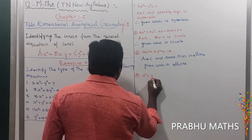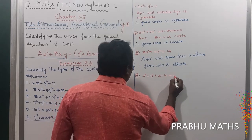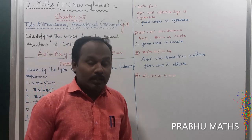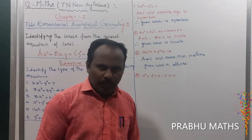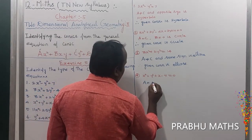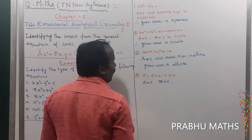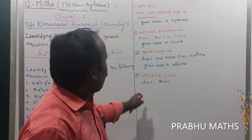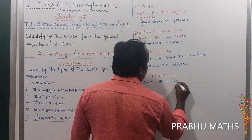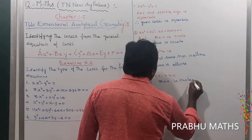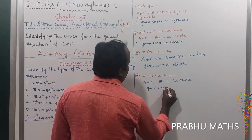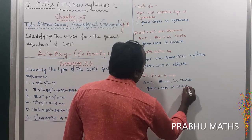Fourth problem: x² + y² + x - y = 0. The coefficient of x² and the coefficient of y² are the same value, so a equals c. Also, there is no xy term in the equation, so b equals 0. With a = c and b = 0, therefore the given conic section is a circle.